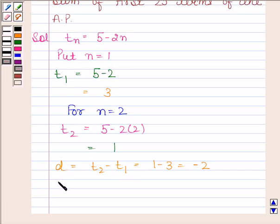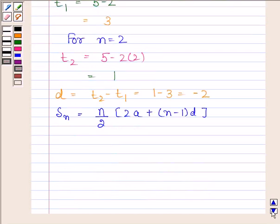We know that sum of n terms of AP is given by n by 2 into 2a plus n minus 1 into d. We have to find the sum of first 25 terms, so n equals 25. And we have already found out that a, the first term, is equal to 3 and common difference d equals minus 2. Now substitute these values in this formula.